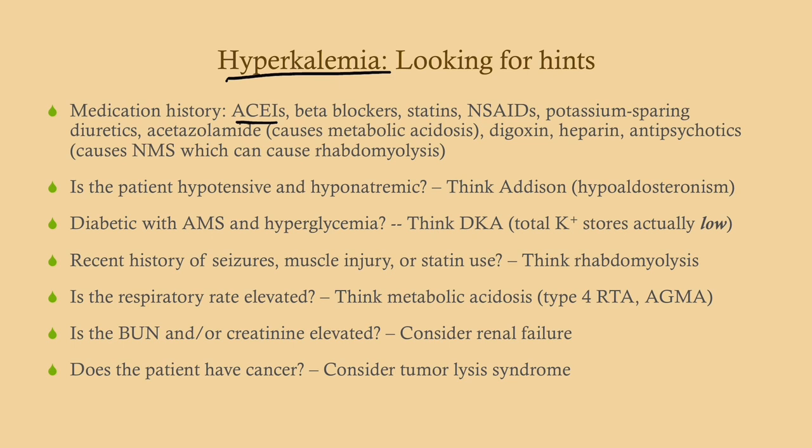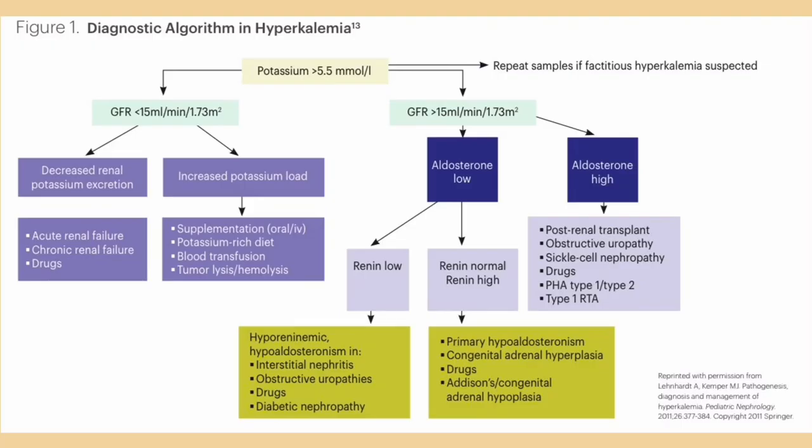If the BUN or creatinine are elevated, consider renal failure. Remember, we take in much more potassium than we need and the kidneys are responsible for excreting the excess — if the kidneys aren't working, you'll have excess potassium in the blood. If the patient has cancer and is on chemotherapy, consider tumor lysis syndrome.